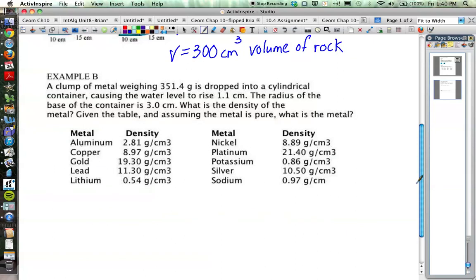Example B: A clump of metal weighing 351.4 grams is dropped into a cylindrical container, causing the water level to rise 1.1 centimeters. The radius of the base of the container is 3 centimeters. What is the density of the metal? Given the table and assuming the metal is pure, what is the metal?